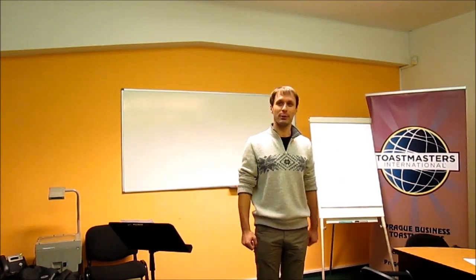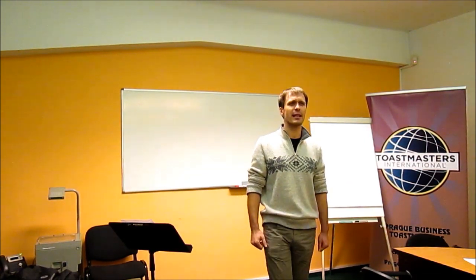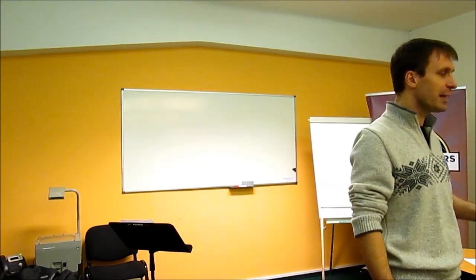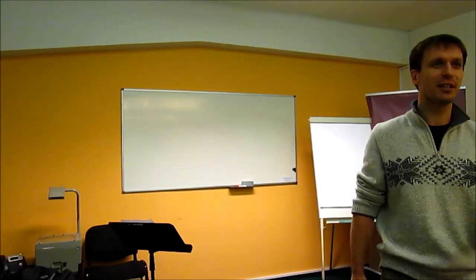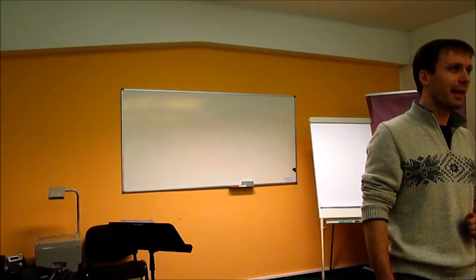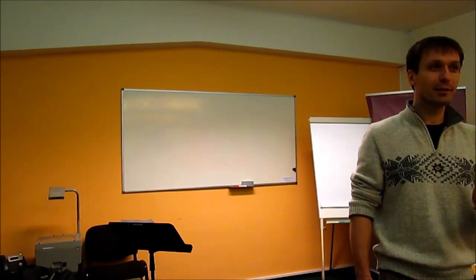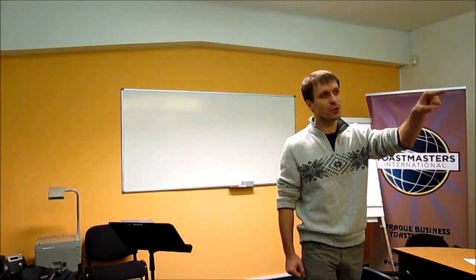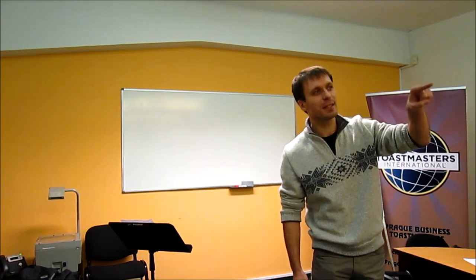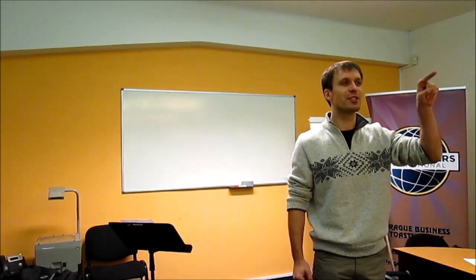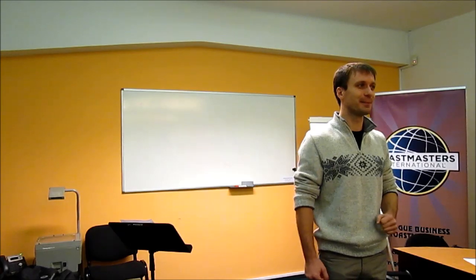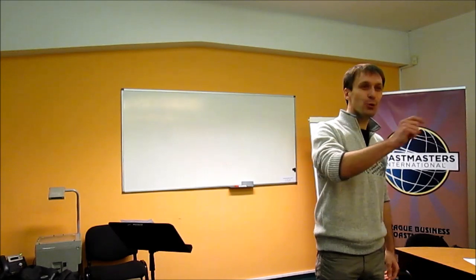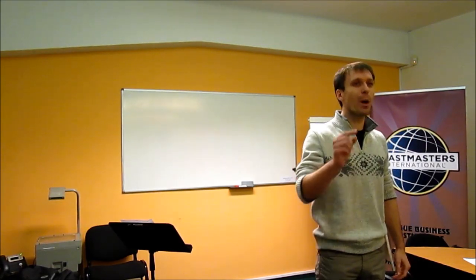So the general evaluator is going to come up here and tell us everything that we did right and wrong during the meeting. Then we're going to have the evaluations telling us what the speakers did right and wrong during their speeches. And then we're going to have table topics where you're going to be called up. Listen to the person over there - she's the table topics evaluator Clara, and she's going to say who is going to be called up and what mistakes they made.